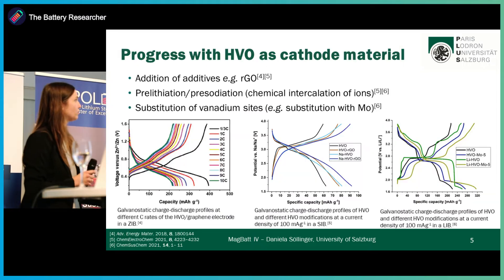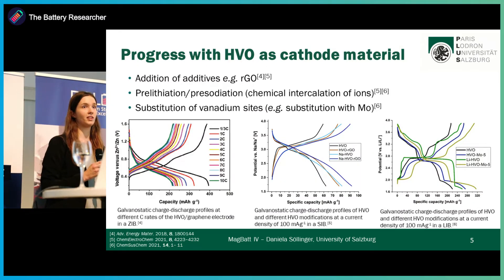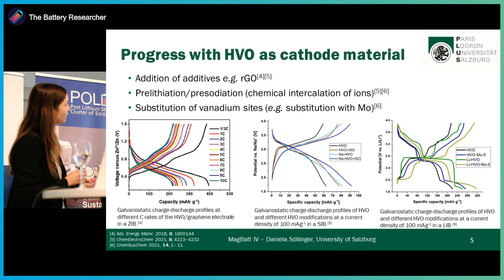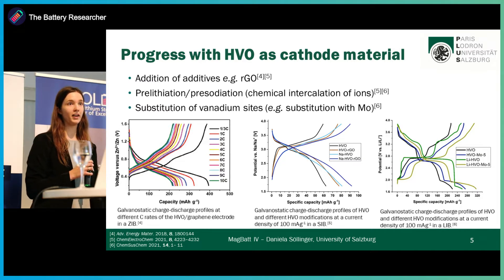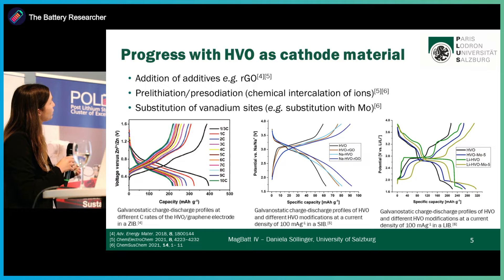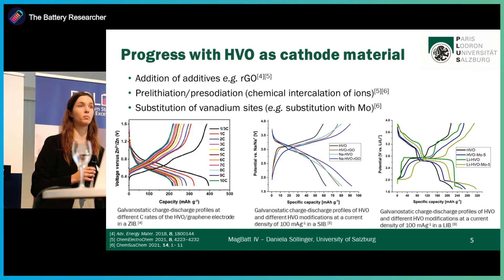Previous research with hydrated vanadium oxide already showed that the material is well established as a cathode material in different battery types such as zinc-ion, sodium-ion, and lithium-ion batteries. Different modifications of hydrated vanadium oxide, such as the addition of additives like nitroso-cobalt oxide, chemical pre-lithiation and pre-sodiation, and the substitution of vanadium sites, can further improve the electrochemical properties.